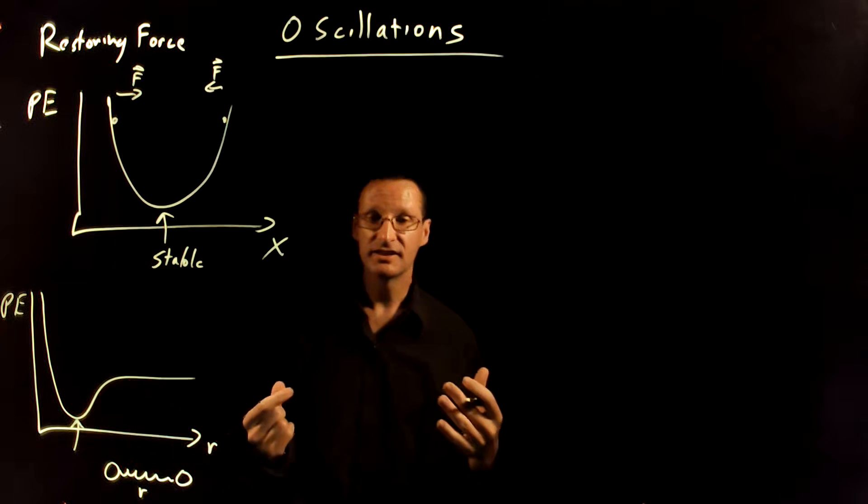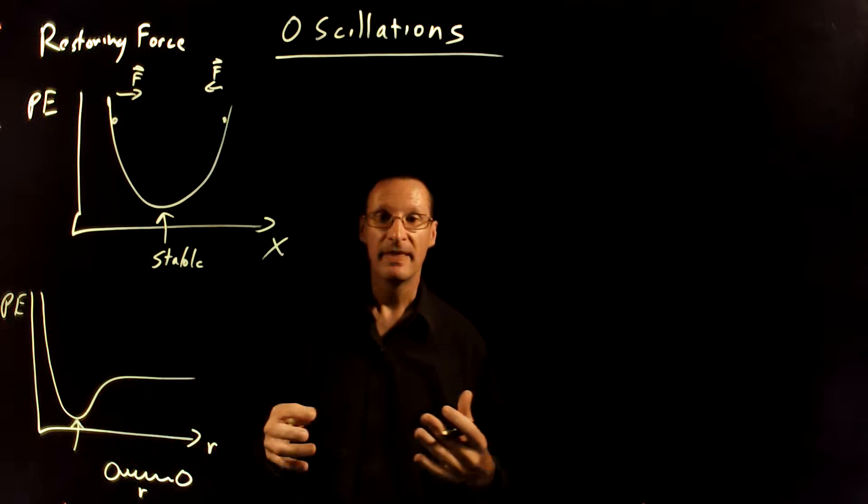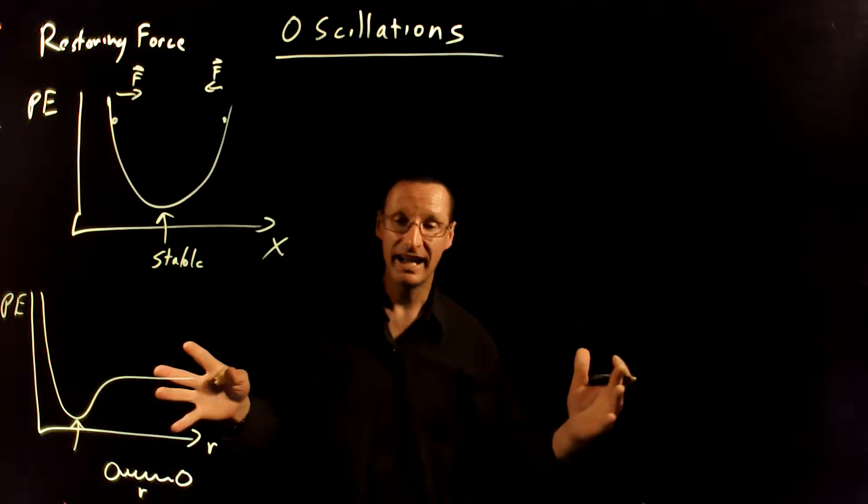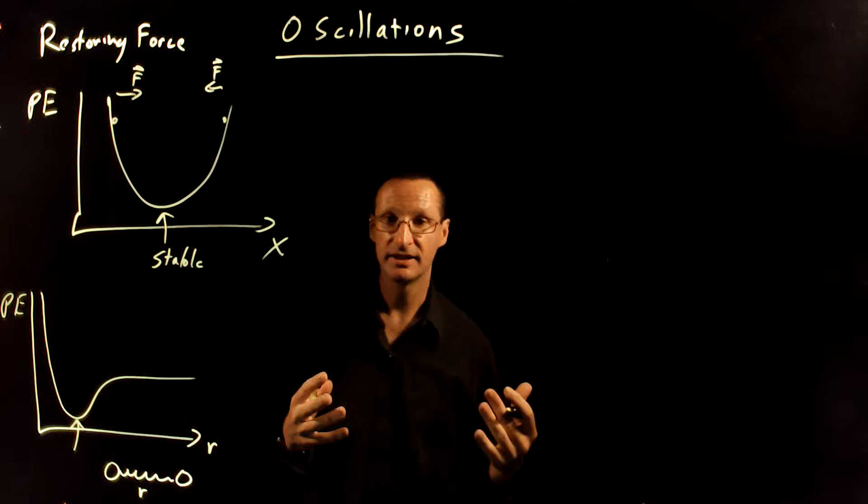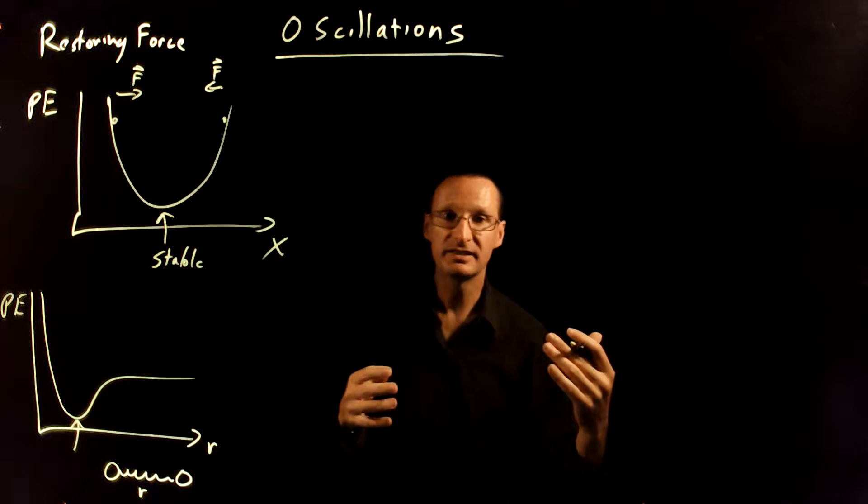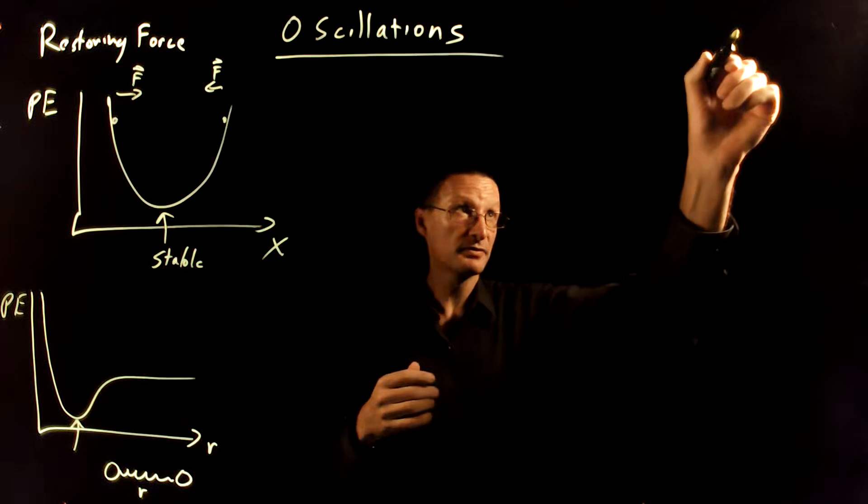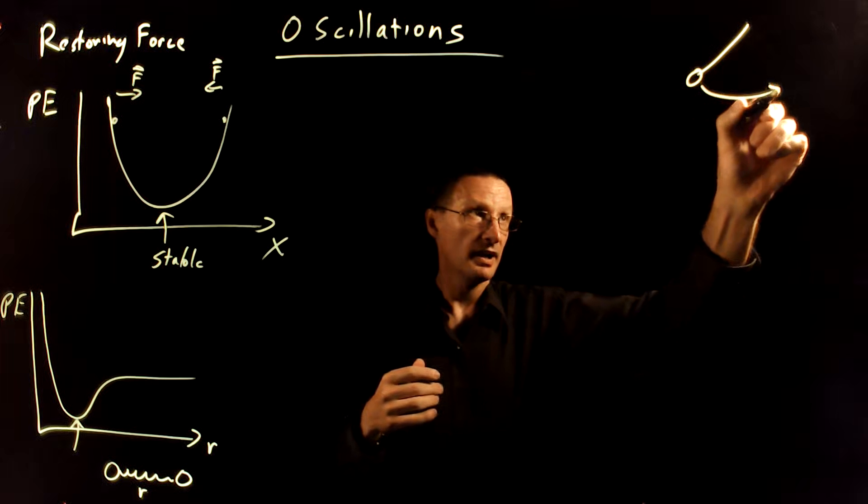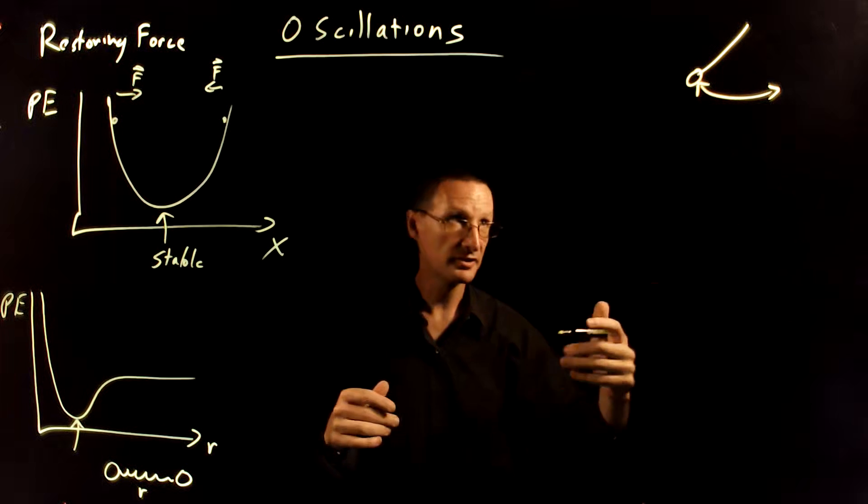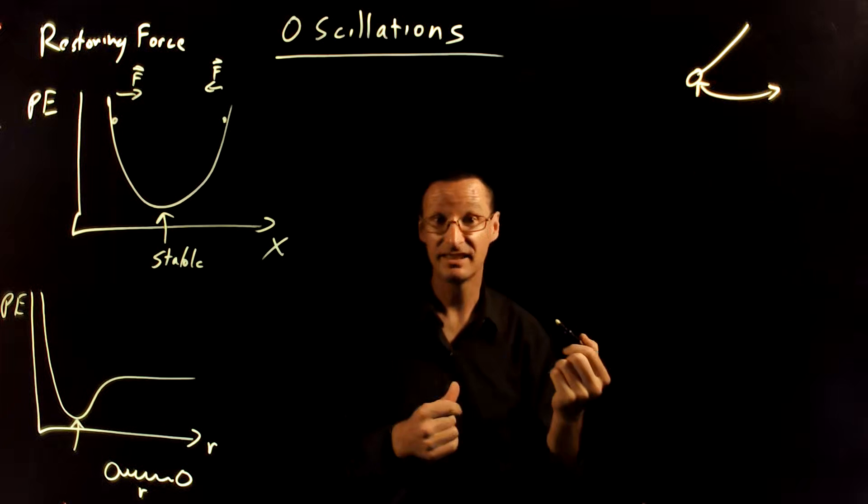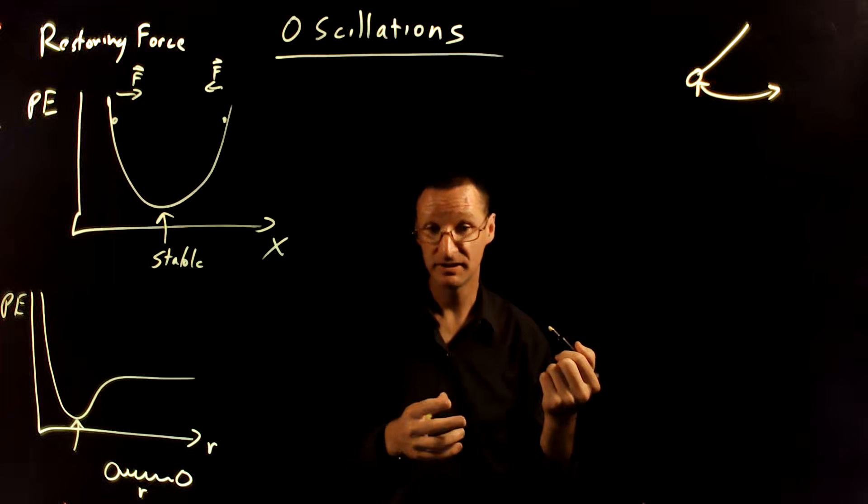Now, why are oscillations so incredibly important? They're important because all waves come from oscillations. Let's do some examples, and I think you'll see this. First of all, there's the pendulum example, and it doesn't really produce any noticeable waves, but you can see it oscillates back and forth around an equilibrium position.